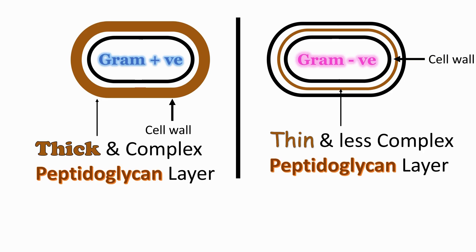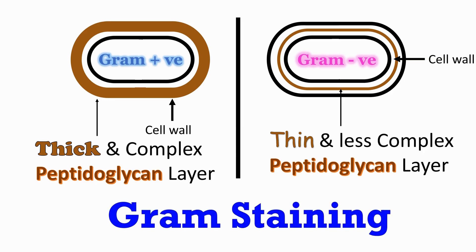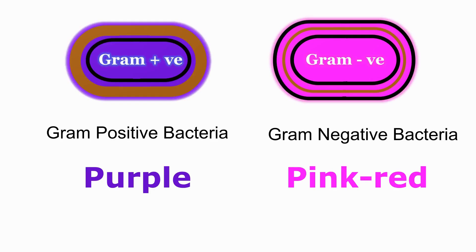If you do gram staining, then after gram staining the gram-positive bacteria stain purple in color, whereas the gram-negative bacteria stain pinkish-red in color.